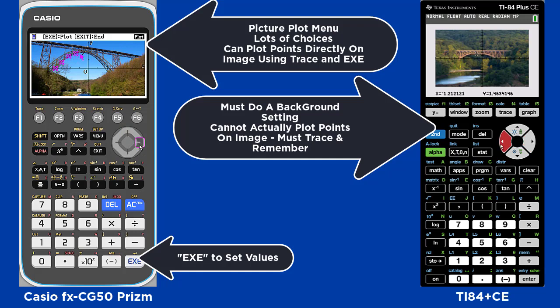On the TI, you are also using a trace feature and moving to different points, and you can see the coordinates on the screen. However, you cannot set the points on the image as you can in the Casio — you must remember them.